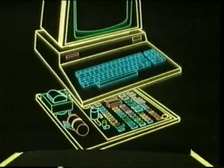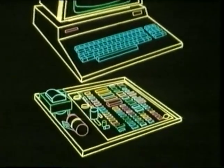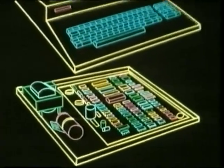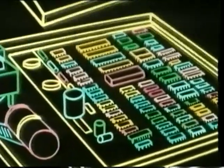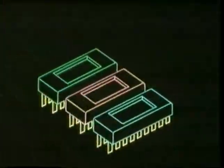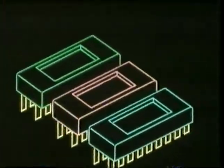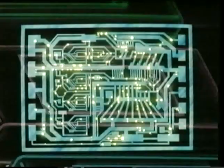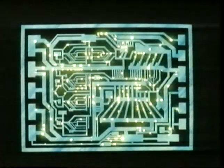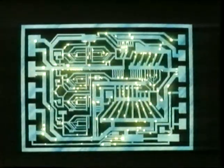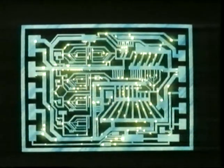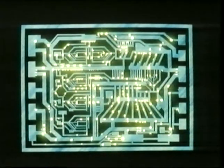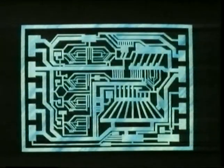If you lift the lid of a computer, you will see a circuit board into which a number of little boxes have been plugged. Each box contains a chip, which consists of thousands of microscopic electric circuits, each of which can be either on or off.